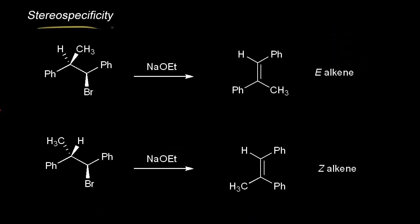Now let's look at stereospecificity. In a stereospecific reaction, the stereochemistry of the substrate determines the stereochemistry of the product, and the E2 reaction can be a good example of a stereospecific reaction. On the left we have our substrate with two phenyl groups and a bromine. Notice the stereochemistry at this carbon: we have a methyl group coming out at us in space and a hydrogen going away from us. When our strong base takes our beta proton, we end up with the E-alkene, with the two phenyl groups on opposite sides of the double bond.